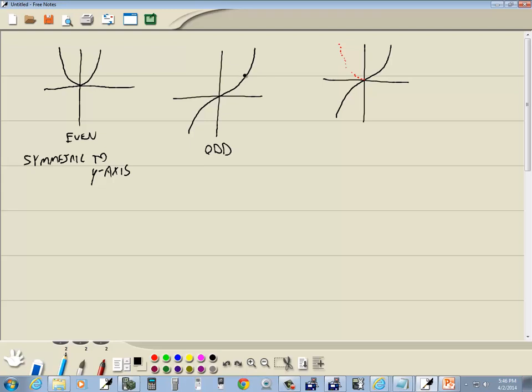Now, this one, you flip it twice—flip it across the y-axis, flip it across the x-axis. If it lands on this, it's odd, and that's specifically symmetric to the origin.